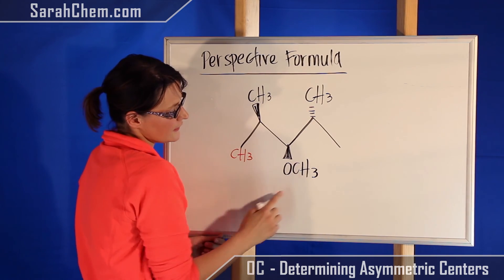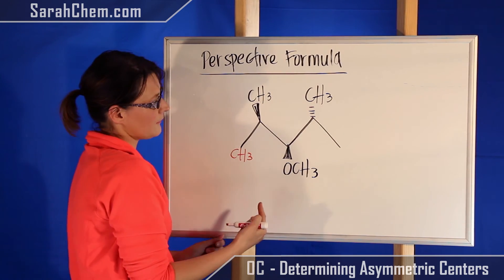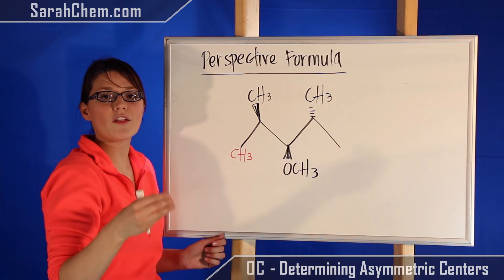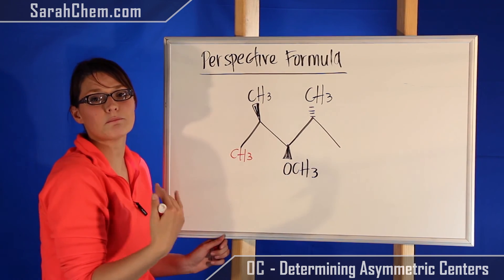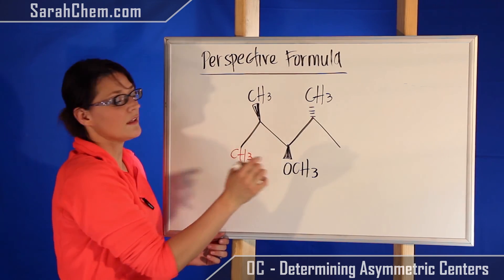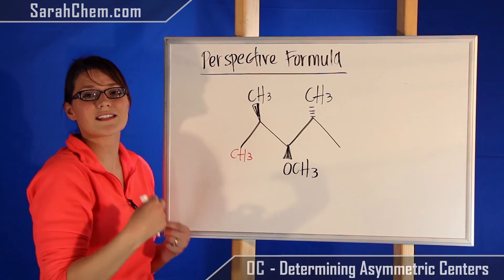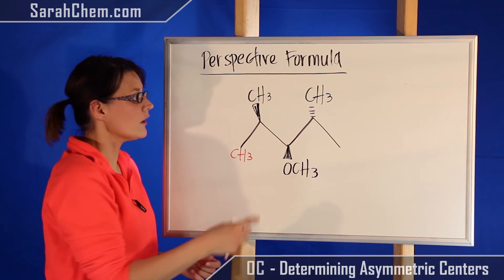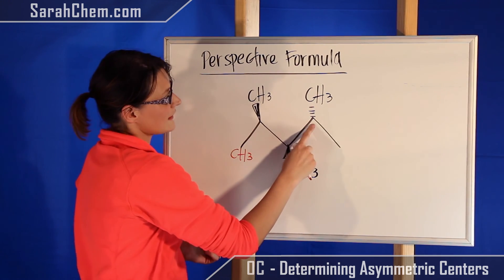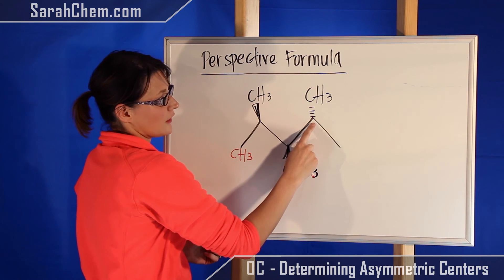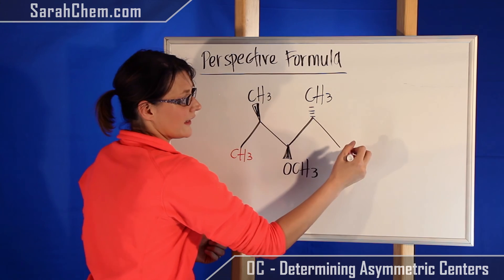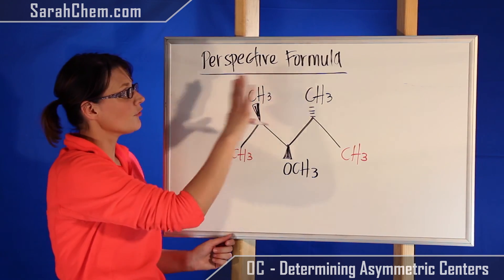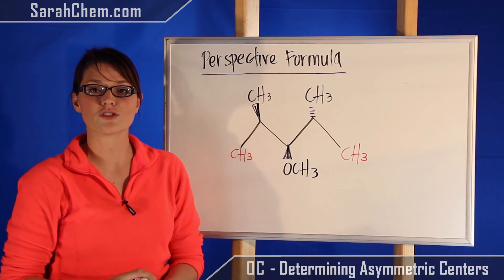Moving down: I've got OCH3, the implied hydrogen, and then this group and this group attached. Now these groups are identical. When figuring out whether there's an asymmetric center, perspective doesn't matter — it doesn't matter that this methyl is coming out and that methyl is going in. We're just looking at what is attached, and as far as attachments are concerned these groups are identical. So that's also not an asymmetric center. This last case works out the same way — it has a methyl, an implied hydrogen, and again a methyl sitting there. So overall this entire compound has zero asymmetric centers.